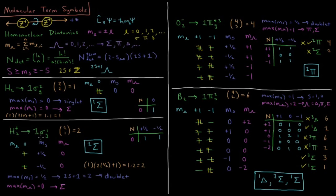For H2+, we have 1 sigma g to the first power. There are 2 choose 1 equals 2 ways to arrange one electron in two spin orbitals — spin up and spin down. So m sub S equals plus or minus one half, and m sub lambda equals 0 for each. The only value of S we can have is one half, giving us a doublet, and the maximum m sub lambda is 0, giving us sigma. So H2+ has a doublet sigma term symbol.